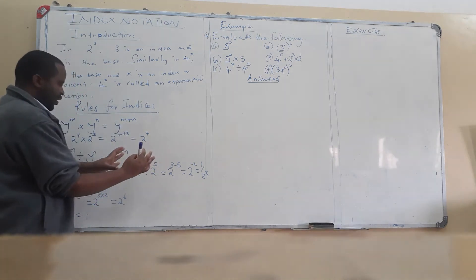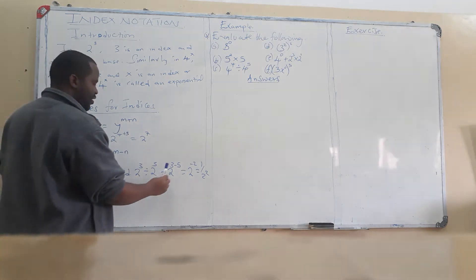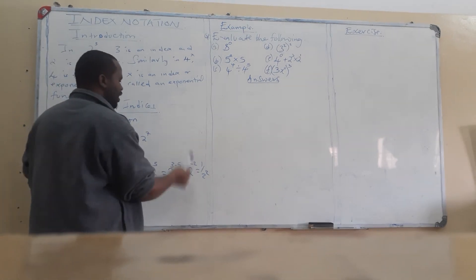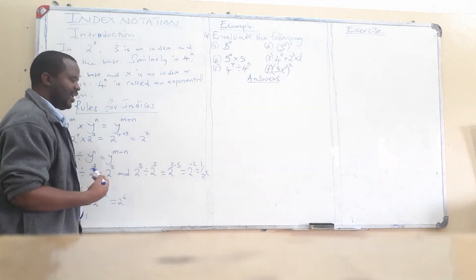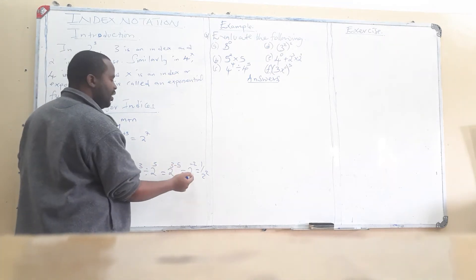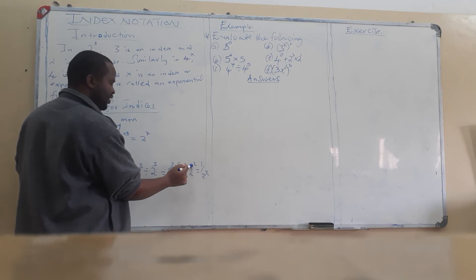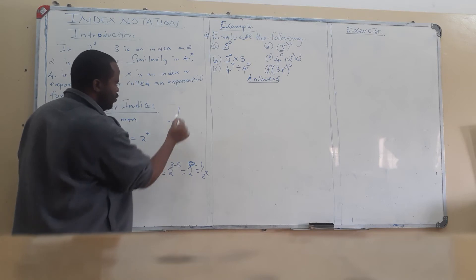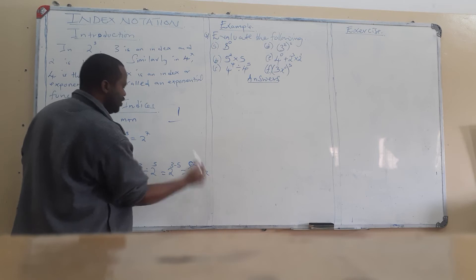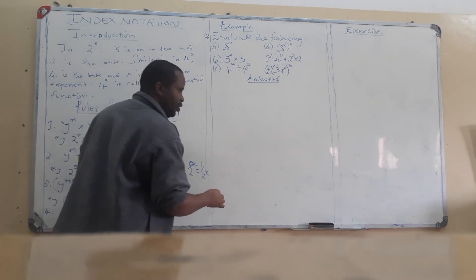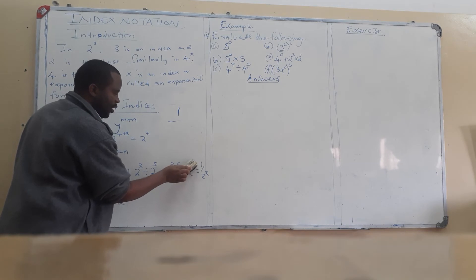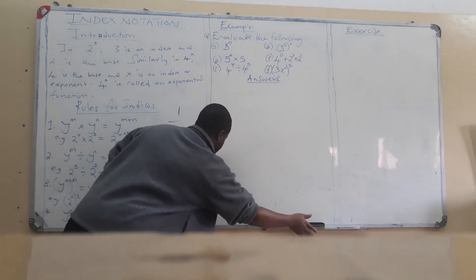Another example: 2 to the power 3 divided by 2 to the power 5. We subtract the powers in the order they appear, so we say 3 minus 5, which gives negative 2. So the answer is 2 to the power negative 2. The negative indicates an inverse, which means 1 over 2 to the power 2. In most cases we don't encourage the negative form, so that would be your final answer.